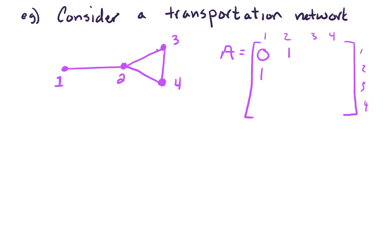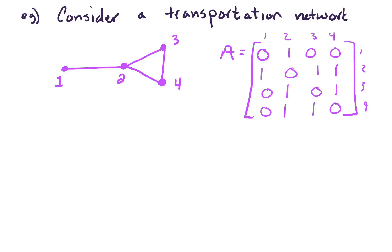Cities 2 and 3 are connected, so we put a 1 in row 2, column 3, and a 1 in row 3, column 2. Also, 2 is connected to 4, and 3 is connected to 4. Filling in the remaining zeros, the second row is 1, 0, 1, 1; the third row is 0, 1, 0, 1; and the last row is 0, 1, 1, 0. This is a symmetric matrix — if you look across the diagonal, the entries are symmetric with respect to that diagonal.